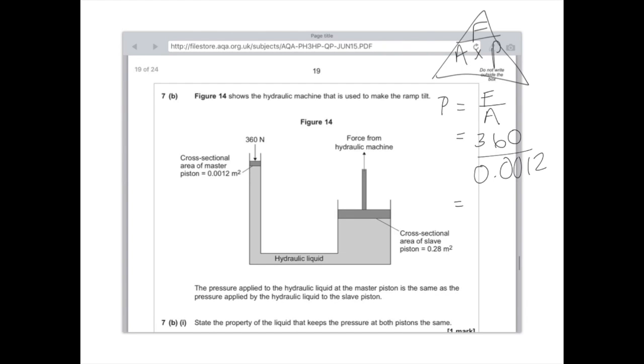3 followed by 5 zeros, pascals. And it crucially tells us down here that the pressure applied to the hydraulic liquid at the master piston is the same as that applied at the slave piston. So therefore, we know that this pressure value that we just calculated applies also here. And now it's just a matter of working out what force is, based on the fact we have both area and pressure.